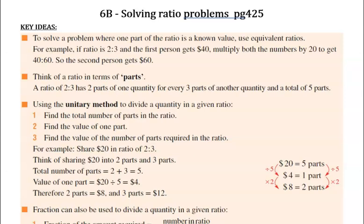For example, if we know that our ratio is 2 to 3, and the first person gets $40, then we multiply both numbers by 20, because 2 times 20 is 40, 3 times 20 is 60, so the second person gets $60. So we can use that information if we have a little bit more information to find the other part of it.